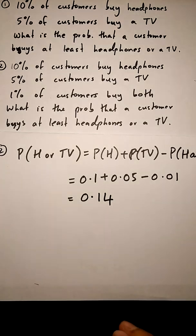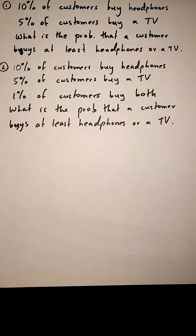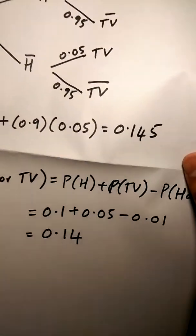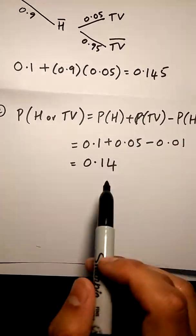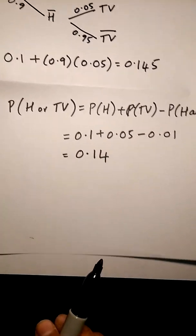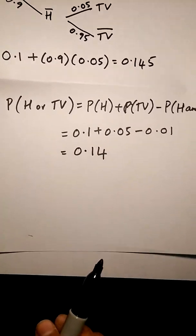plus the probability that a customer buys a TV minus the probability of both. Okay, so big difference in these two questions. Given percentage of both, do it using this formula. If you're not given this percentage of both, use the tree diagram method.